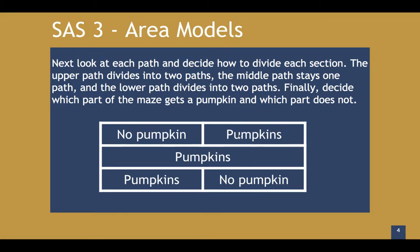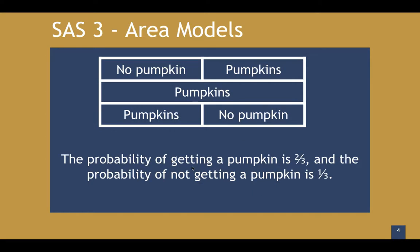The upper path divides into two paths, so we separate it into no pumpkins or pumpkins. Middle path stays one path and it's just pumpkins. And lower path also separates into pumpkins and no pumpkins. So what is the probability of this? We're going to get two-thirds probability of getting a pumpkin and one-third of not getting a pumpkin.